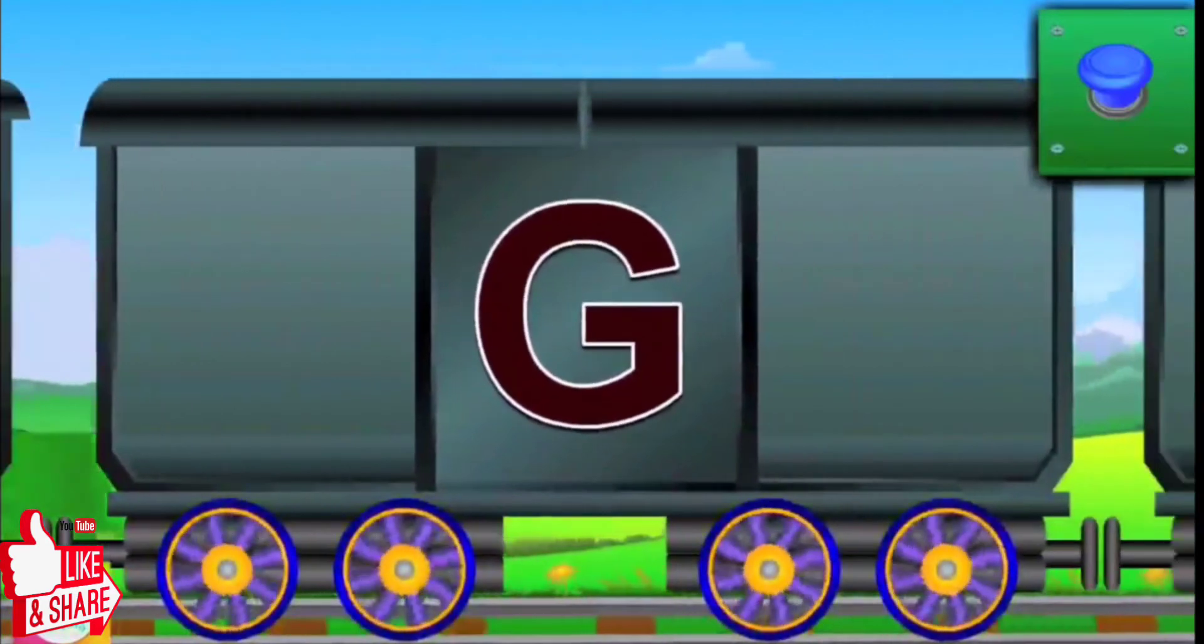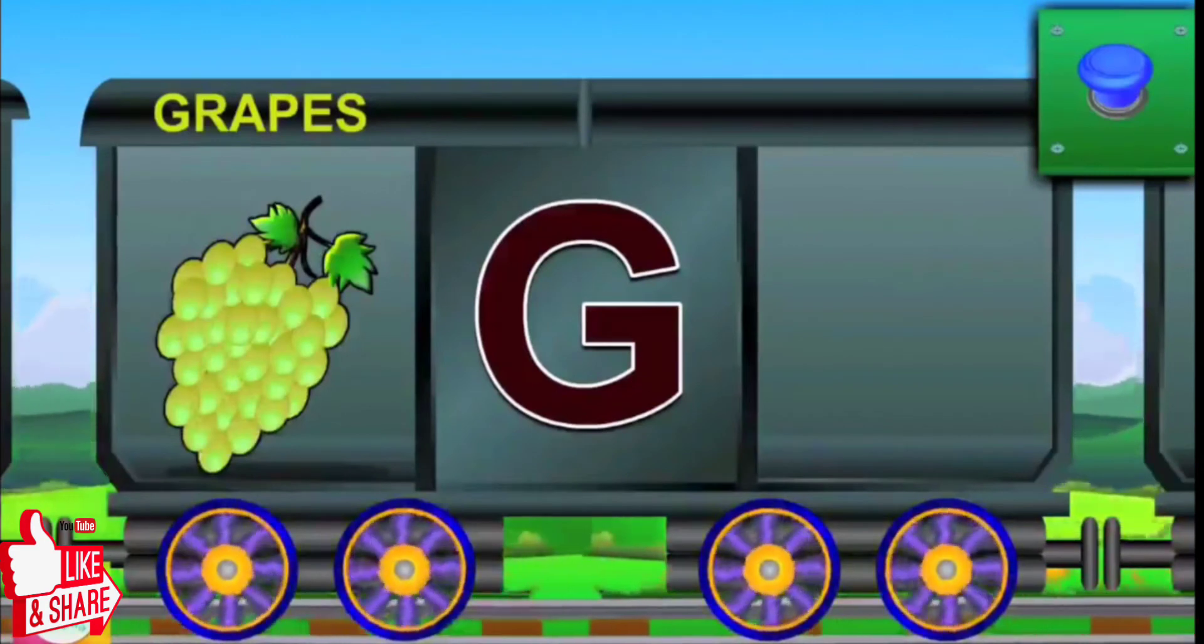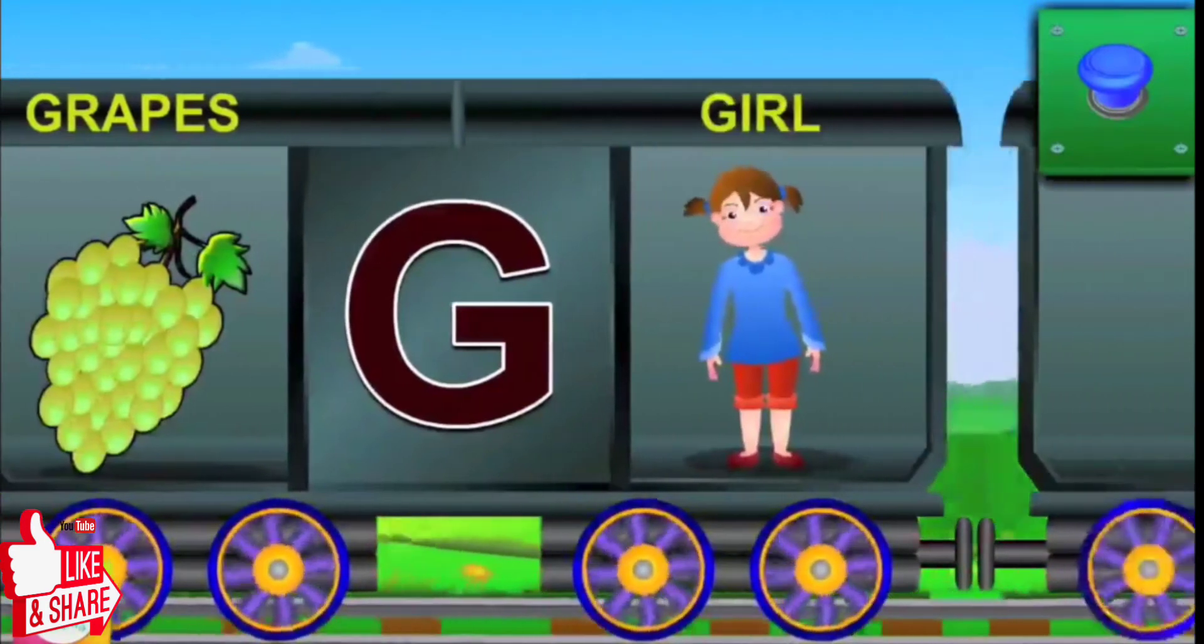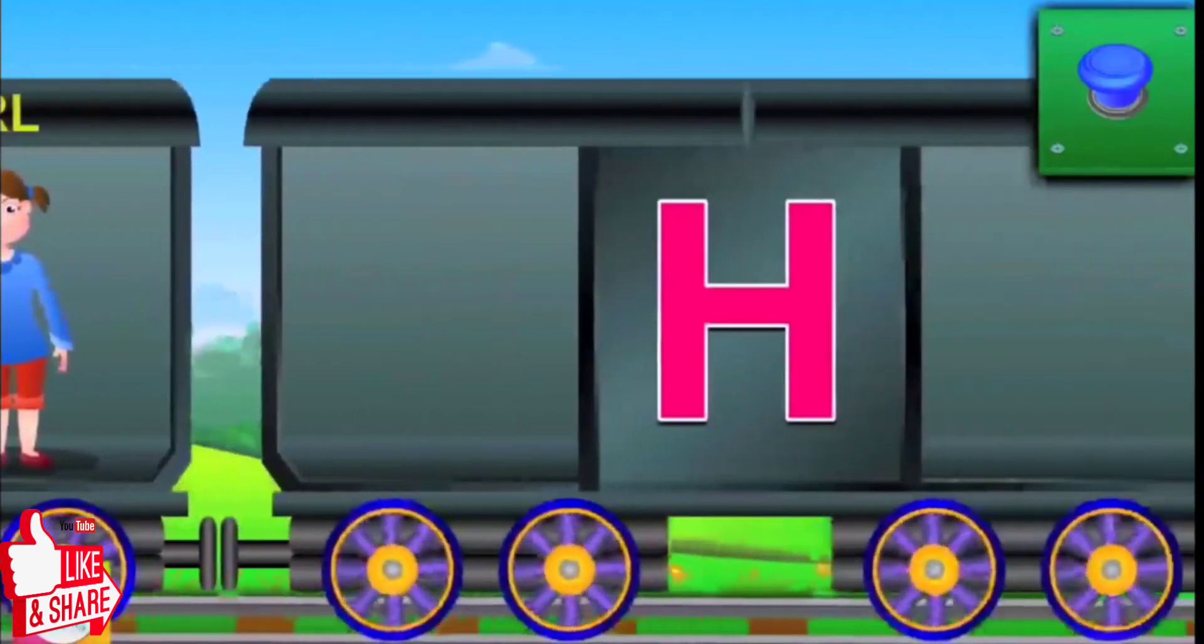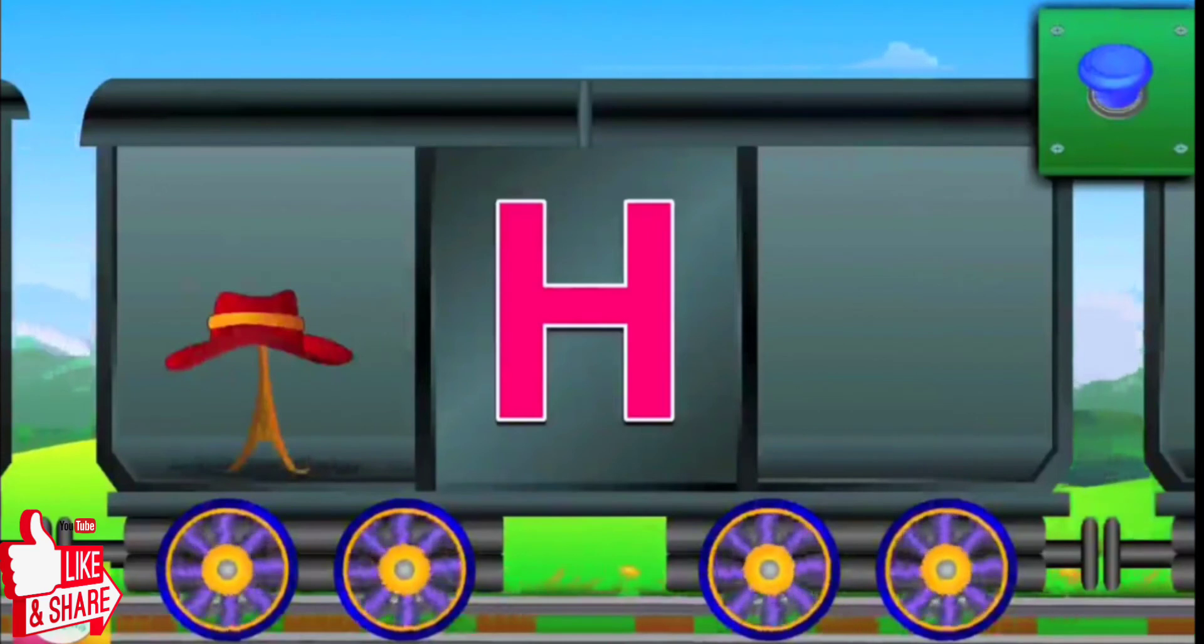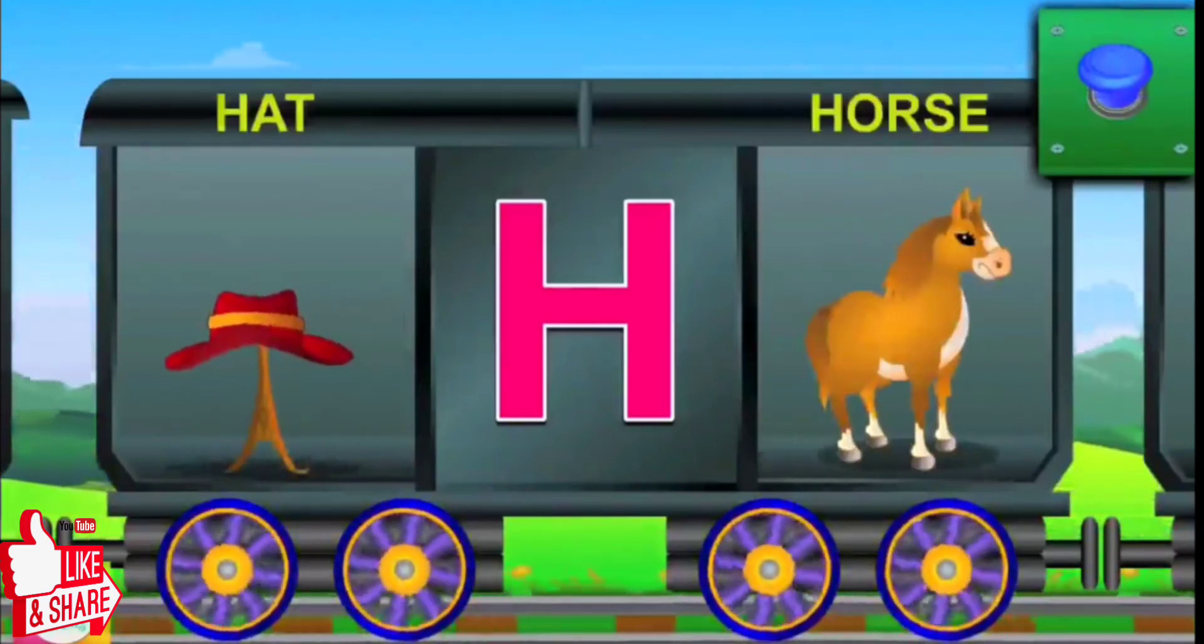Now G. G for grapes, and the grapes are green. G for girl, and the girl is happy. Here is H. H for horse, and the horse runs fast.